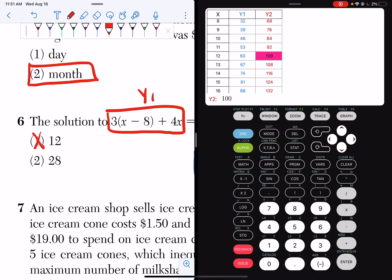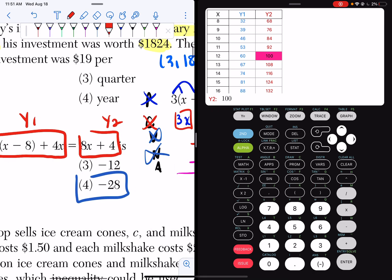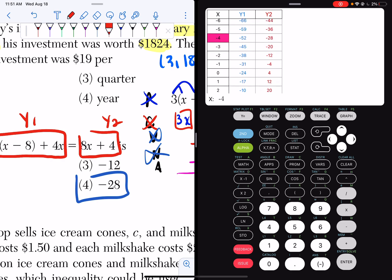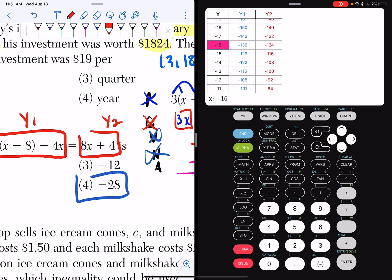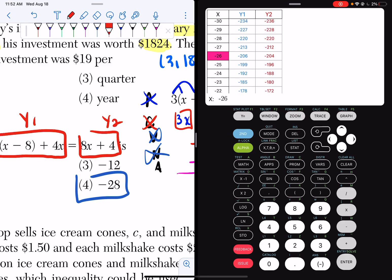Since we already solved this by hand, and we know our answer is negative 28, we're going to scroll up to negative 28. It's going to take a while, but I can see the right answer. And if I look, I get negative 220 and negative 220.